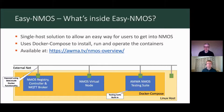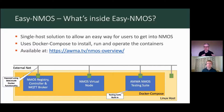The second container is basically an example NMOS node — we describe this as an NMOS virtual node, principally because it doesn't have the ability to send any formal media around your network, so it won't cause any trouble by sending large flows around. But what it does have is a full implementation of the NMOS operational control APIs, so it's great for doing and testing connection management, IS-07, IS-08, etc. It implements all of the respective control layers and will automatically register and appear in the registry when it's started.